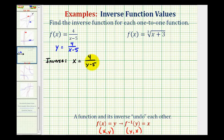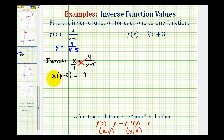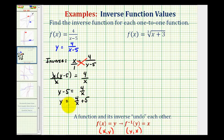To solve for y, we treat this as a proportion and cross multiply: x times the quantity (y − 5) equals 4. Then we divide both sides by x, leaving y − 5 = 4/x. Adding 5 to both sides gives y = 4/x + 5. Replacing y with inverse function notation, we have f⁻¹(x) = 4/x + 5.